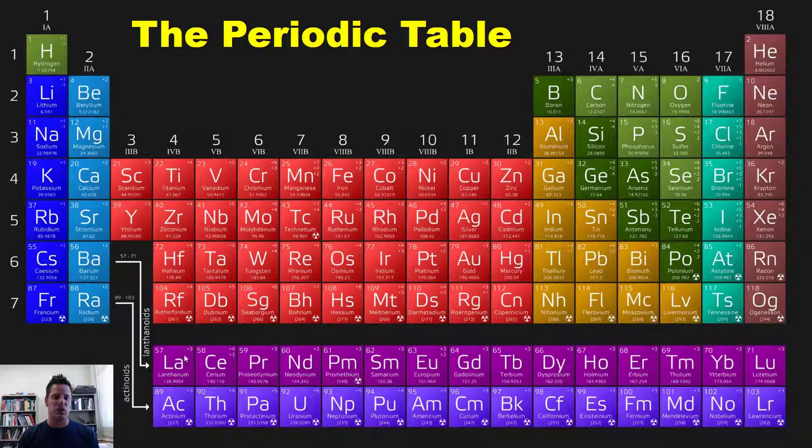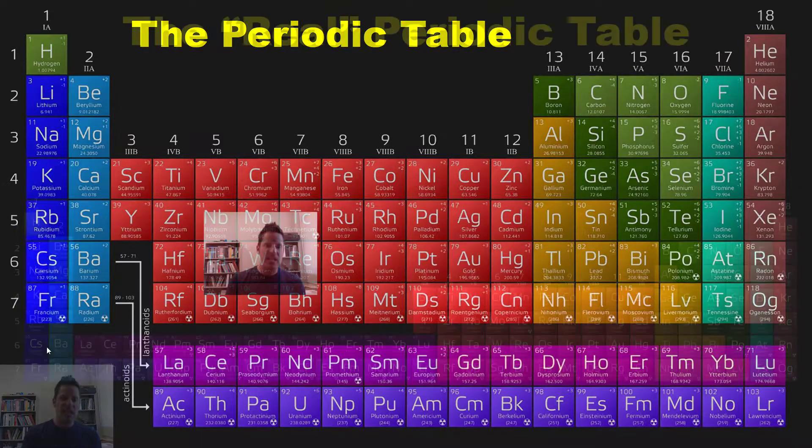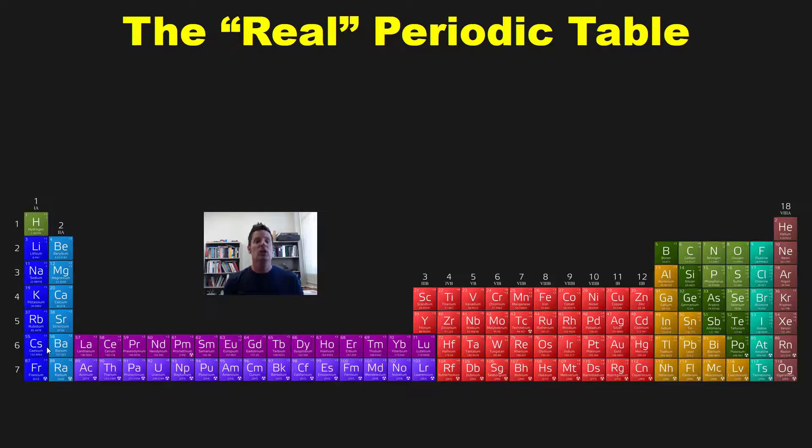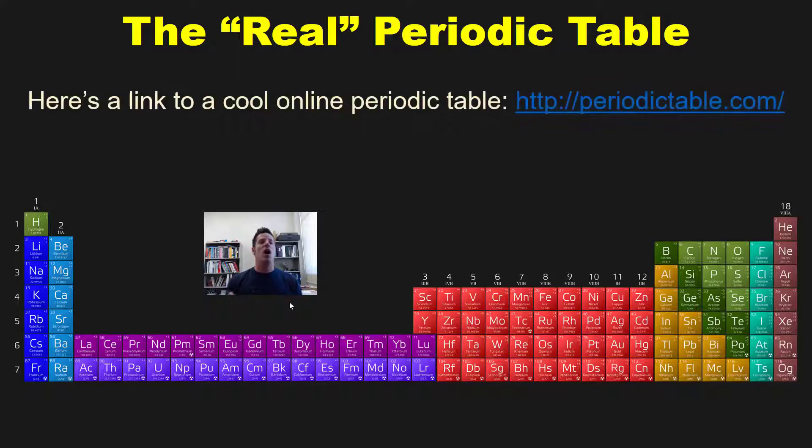In reality, the actual periodic table should have this cluster or block of elements inserted right in this location. In other words, this is what the real periodic table should look like if drawn out totally correctly with all boxes in their proper locations. Again, the reason we don't usually depict it this way is because it doesn't fit as neatly on an 8.5 by 11 inch sheet of paper in portrait orientation. Here, by the way, is a cool link to an online periodic table that I invite you to test out. I will post this link in the description beneath this video.